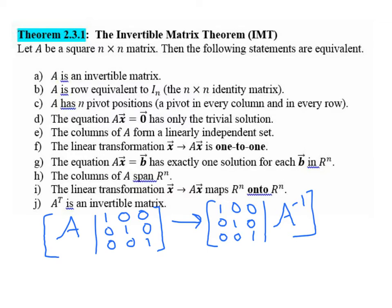And then C says A has n pivot positions, so we end up with a pivot in every column and every row. And that would have to be true if we were able to row reduce to the identity matrix, then yes, we'd end up with a pivot in every column and every row, which would give us C.